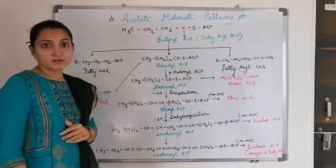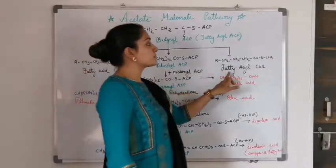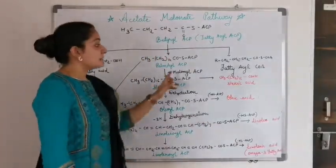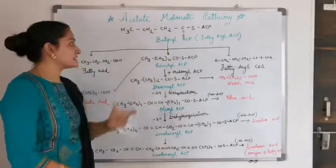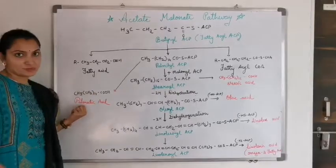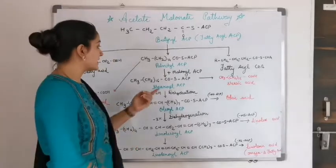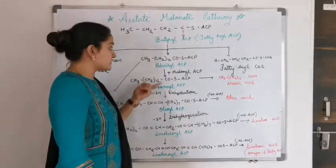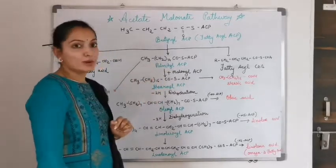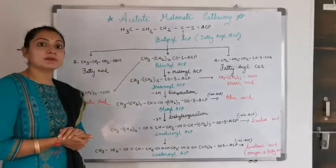Butyryl ACP, also known as fatty acyl ACP, gives three compounds. By further addition of malonyl ACP units, it gives palmitoyl ACP (CH₃(CH₂)₁₄CO-SACP), which yields palmitic acid — one type of fatty acid. Palmitoyl ACP with addition of one more malonyl ACP gives stearoyl ACP, where CH₂ repeats increase from 14 to 16 because two more carbons are added. Stearoyl ACP gives stearic acid, another fatty acid from the acetate-malonate pathway.